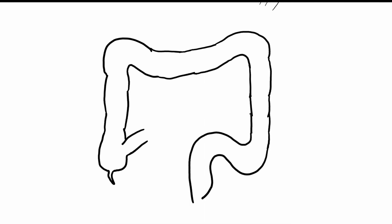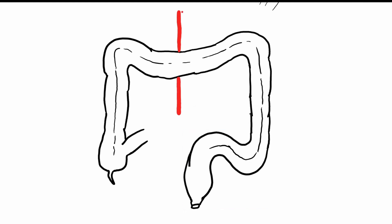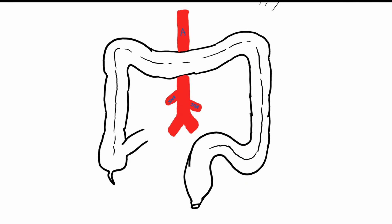Now we will move to the blood supply of the colon. It is supplied mainly by branches of the superior and the inferior mesenteric artery. The superior mesenteric artery ends with the ileocolic artery, which gives ileal branches, a cecal branch, and the appendicular artery. Along its course, the superior mesenteric artery gives the right colic artery to the ascending colon and the middle colic artery to the transverse colon.